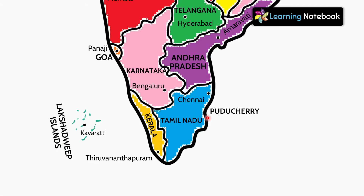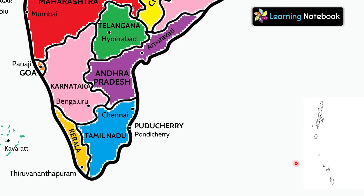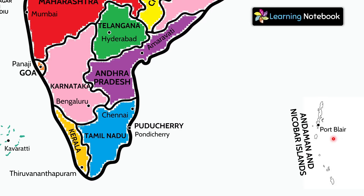This is Puducherry and its capital is Pondicherry. Now the next union territory of India is Andaman and Nicobar Islands and its capital is Port Blair.